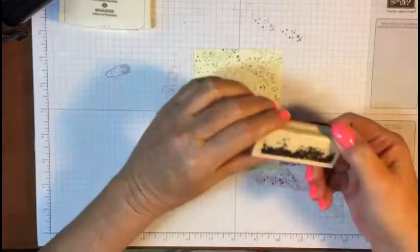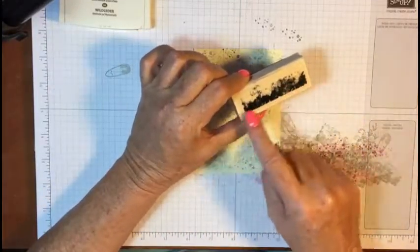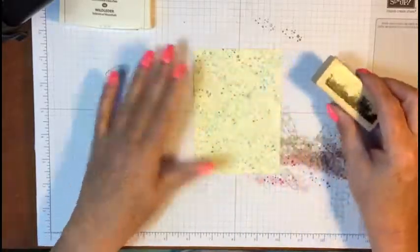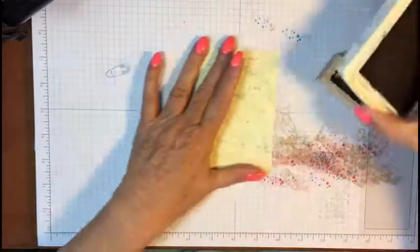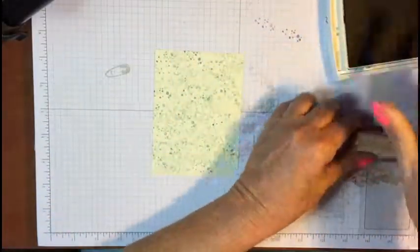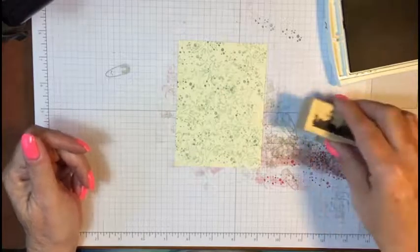All right, now next thing we're gonna do is take this stamp right here. This stamp has this edge, it's kind of like an edge of a dirty book or something. We're gonna do this one in soft suede. Now soft suede is kind of dark, so we are definitely gonna have to stamp off. See how dark that is?